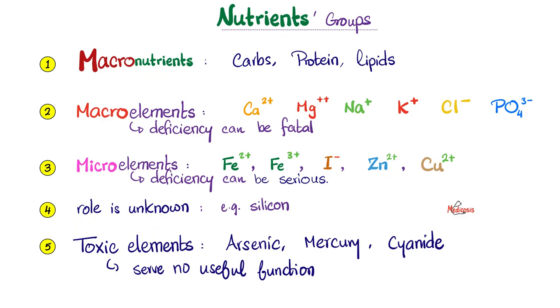Group number four, the role is unknown inside the body. Example, silicon. Toxic elements is group five: arsenic, mercury, cyanide. They serve no function in your body, and they are toxic.